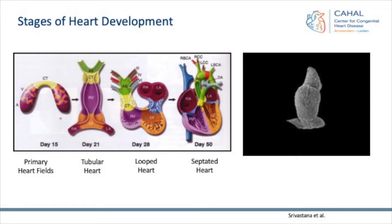Just a brief overview of the stages of heart development. You have the primary heart fields that fuse and become a tube. Then the heart starts looping at around day 28 in humans, and then eventually septation and valves come into place, and then you have the mature heart. This is a nice movie with electron microscopy photos showing this looping process of a chicken heart.